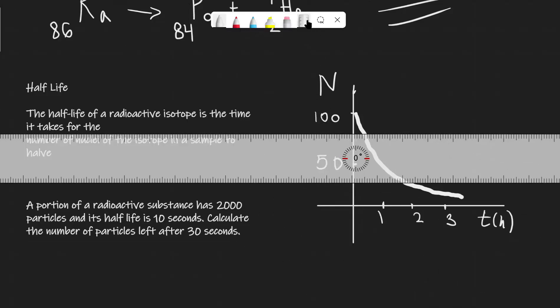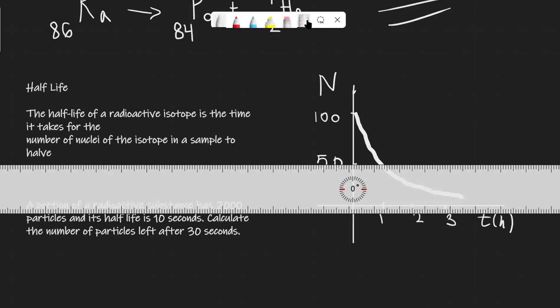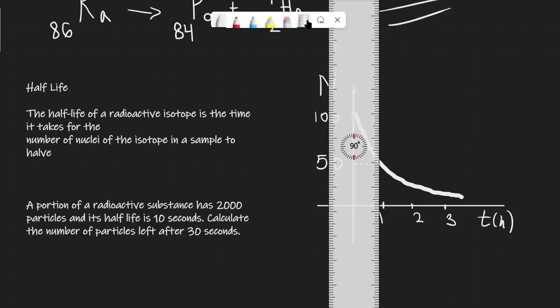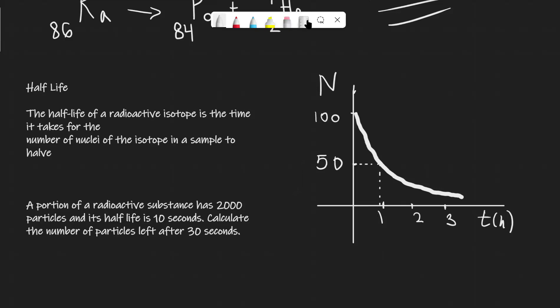Now in order to find the half-life, all we need to do is find the halfway point of the particle. So we're starting off with 100. So therefore when we get to 50 the number of particles is actually halved. And all we need to do is essentially trace the time that that actually corresponds to. So in this graph, we can see that the half-life of this particular sample is 1 hour. So we can just say that t half is equal to 1 hour for this graph.